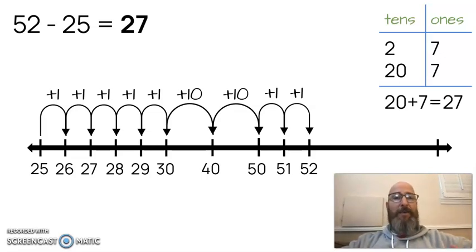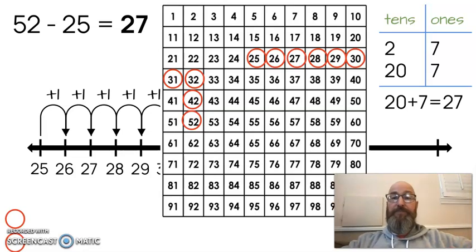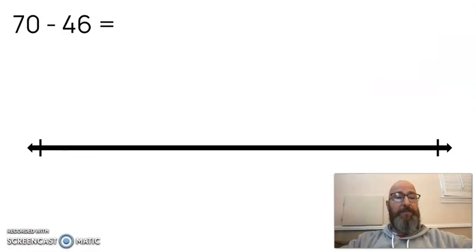Again, let's look at a 100 chart to prove it. If I'm going to start at 52 and go down to 25, I would go 10, 20, 21, 22, 23, 24, 25, 26, 27. If I were going the other way, if I were adding up, I would go 1, 2, 3, 4, 5, 6, 7. And then I would add 10 here and a 10 here. And again, that makes 27. Let's do one more question together.